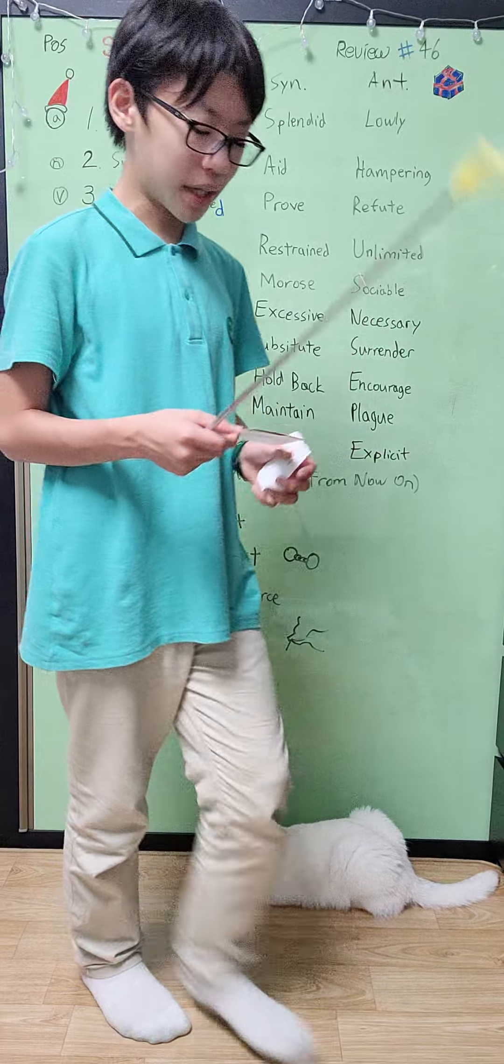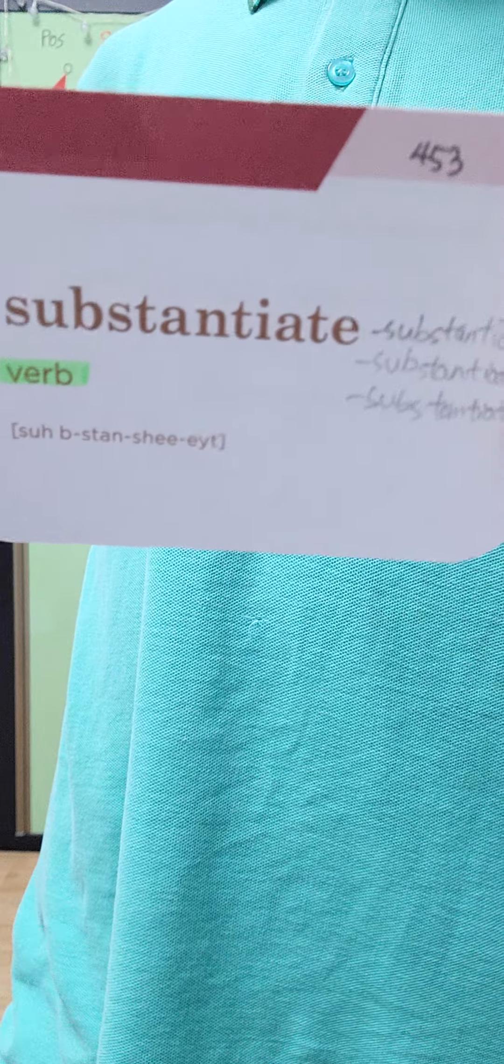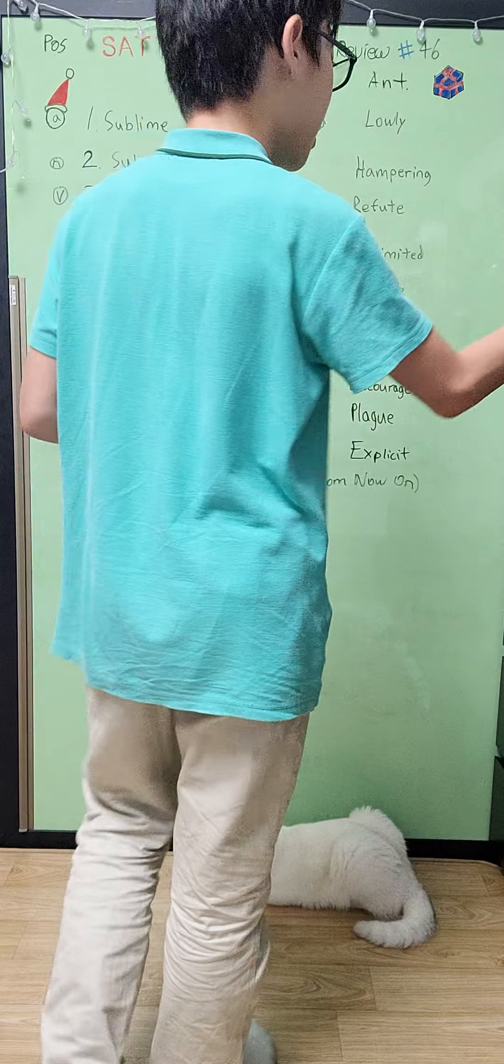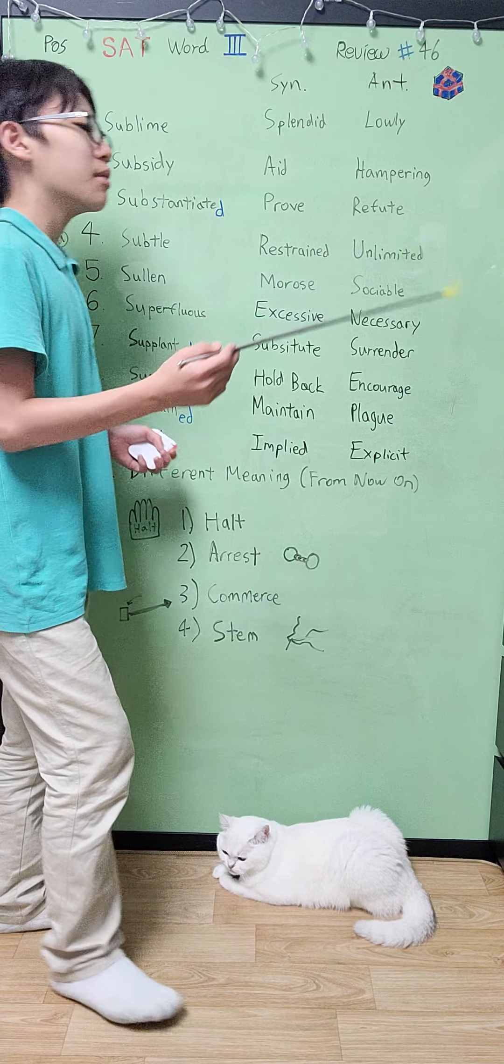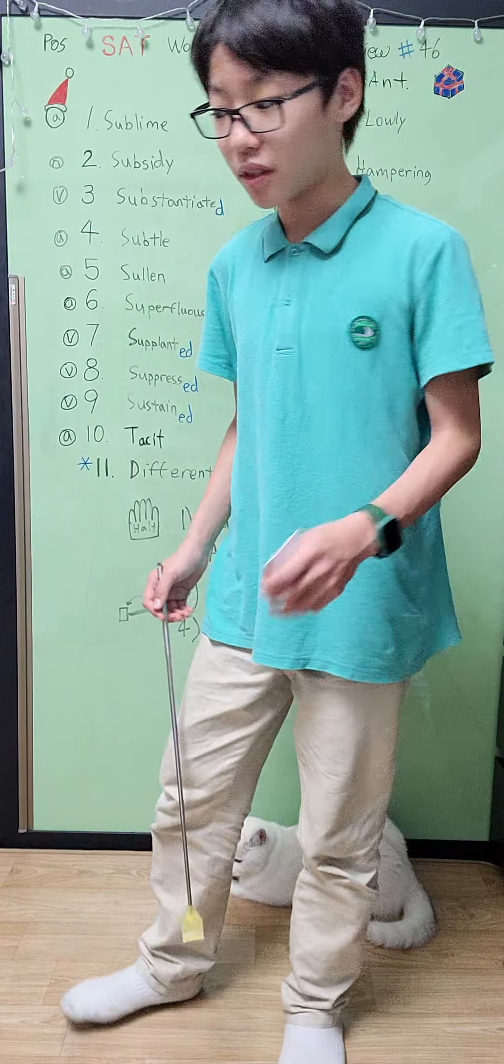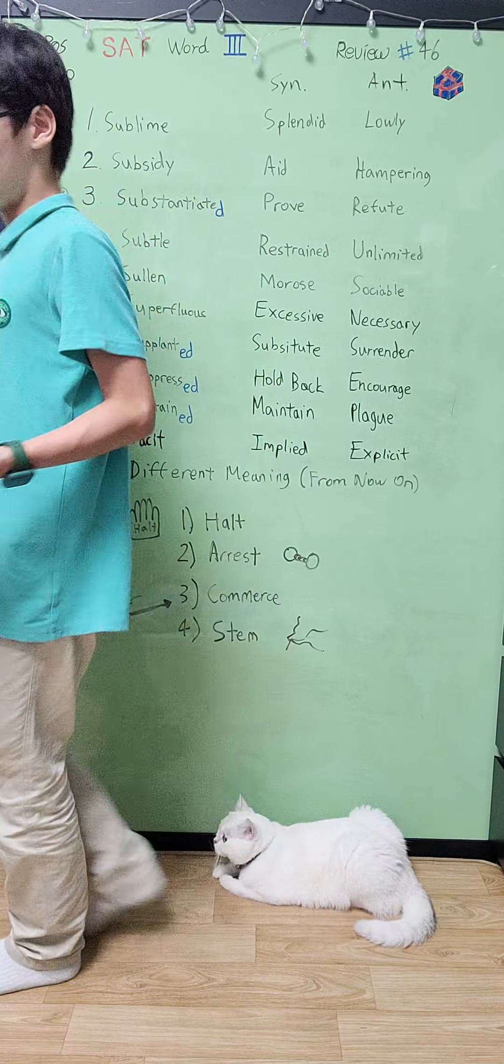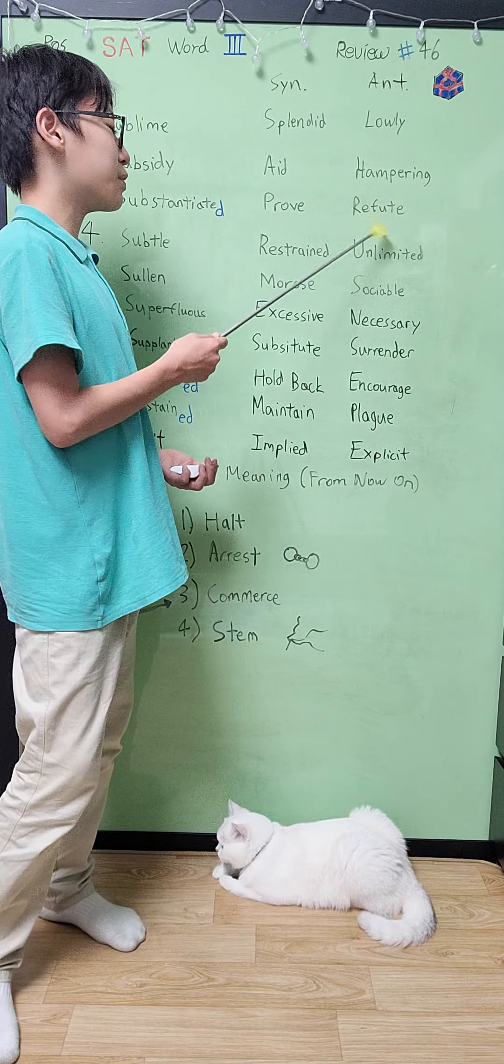Our next word is a verb called substantiate. It basically means to establish by proof or by evidence, so it should be like proved. The antonym would be refute because, other than proof, it also needs to be supported. So yeah, of course the antonym will be refuted or to be disproved.